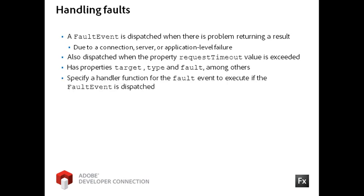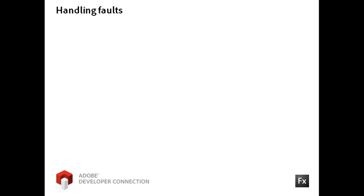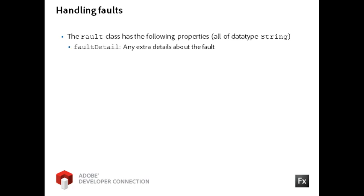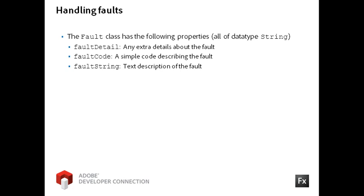As when handling a result event, you will define an event listener function and pass the event object to it. The FaultEvent class contains four string properties: the FaultDetail property contains extra details about the fault; the FaultCode property is a simple code for describing the fault; the FaultString property is a text description of the fault; and the Message property is a concatenation of the other three properties.